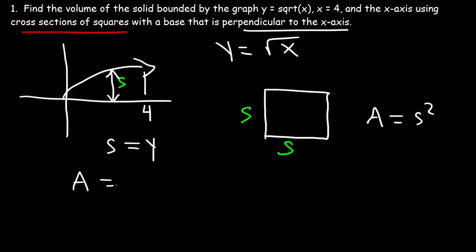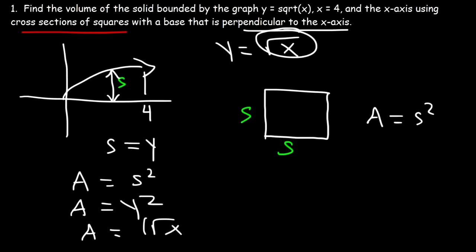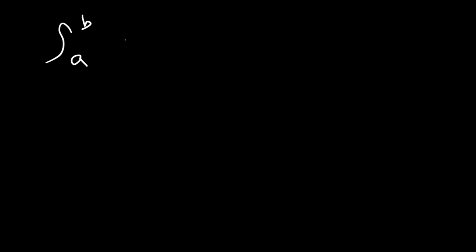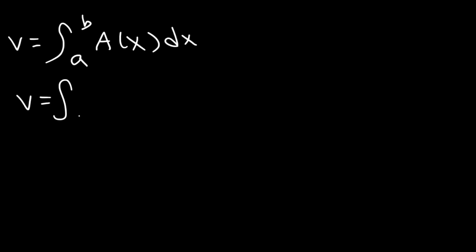Notice that s is the same as y, so the area, which is s squared, is also equal to y squared. And since y is the square root of x, our goal is to get the area function in terms of x. So A(x) is equal to x. We're going to integrate it from 0 to 4, where A(x) is simply x.